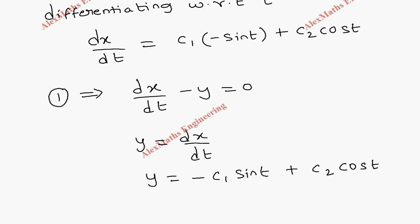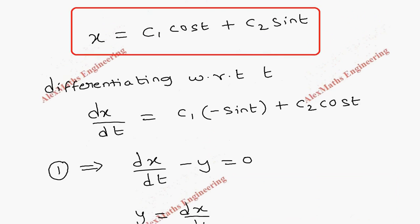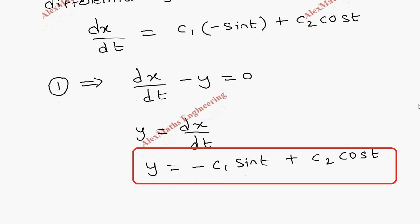So we got the solution y. So we got two solutions. One is x which is c₁cos(t) + c₂sin(t) and y is -c₁sin(t) + c₂cos(t).